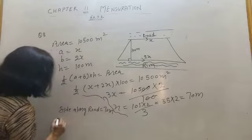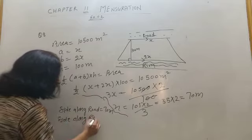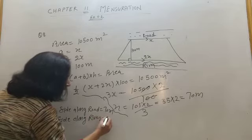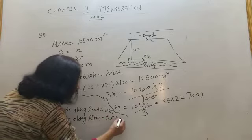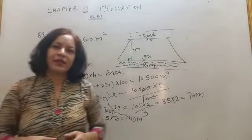Then side along the river. It will be 2x, means 2 into 70, 140 meter.